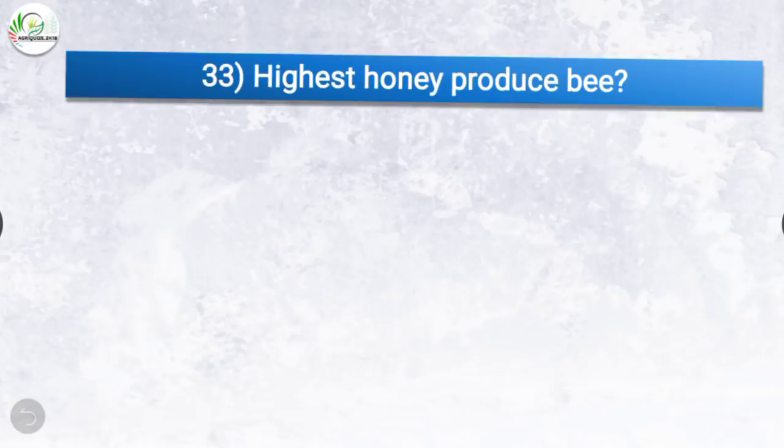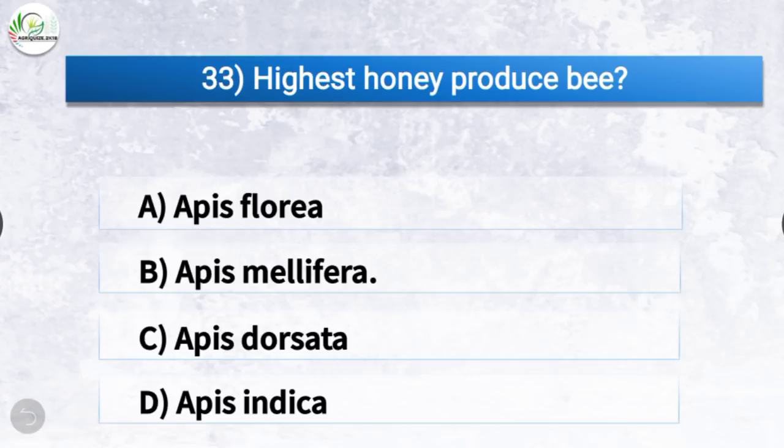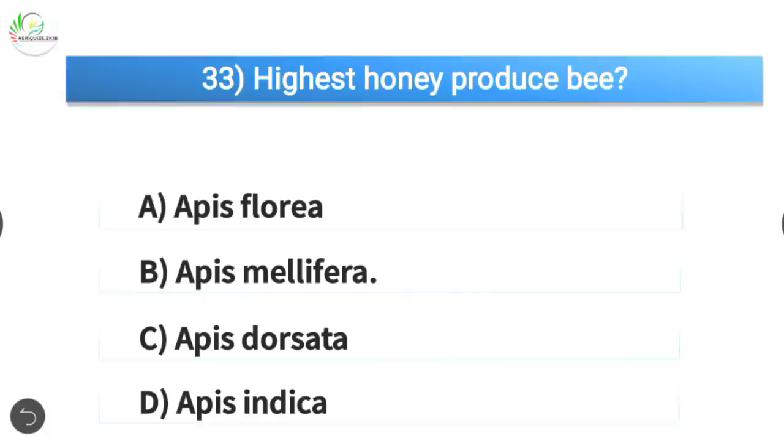Question number 33: Highest honey production is produced by which bee? The correct answer is option B, Apis mellifera. The highest honey-producing bee is Apis mellifera.